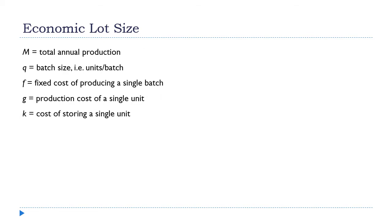I've stripped this down and summarized all the variables from the previous slide. What I want to do is minimize the total cost. The total cost has two components: the production cost and the storage cost. I need to rewrite the right-hand side in terms of our variables, so let's think about the production cost first.